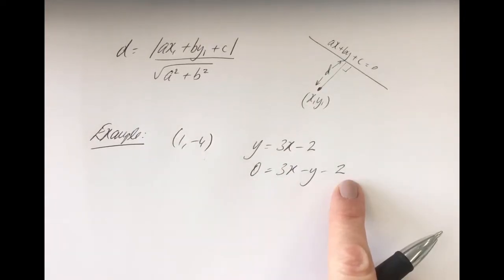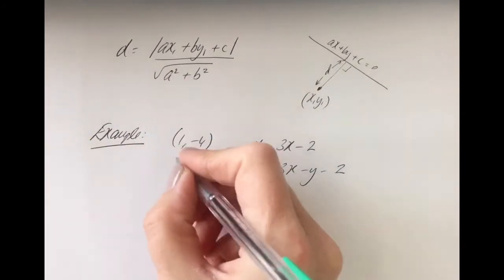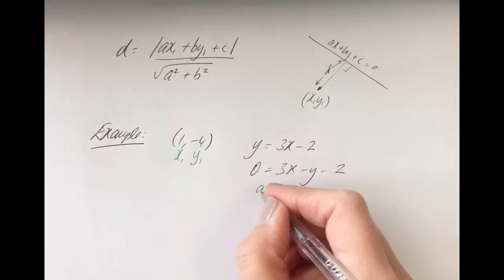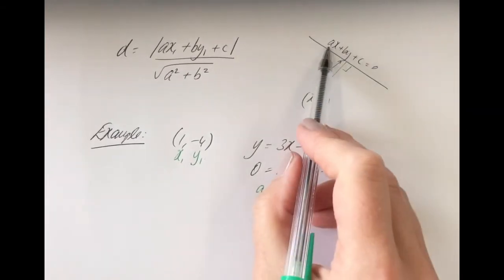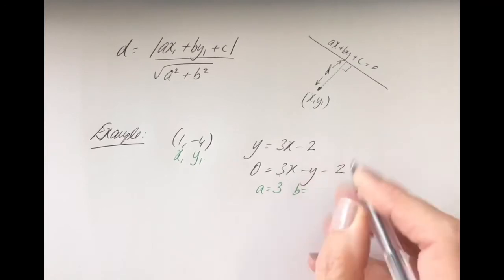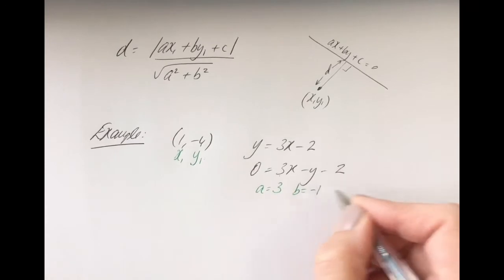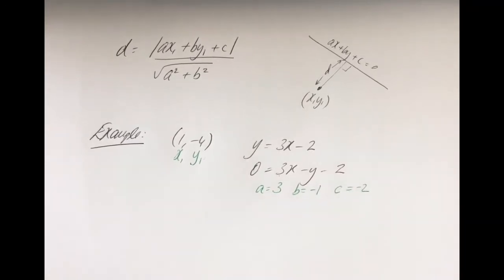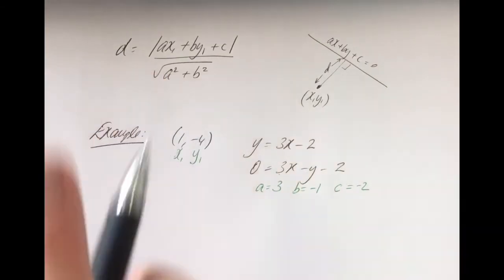Now that's in the format I need, so I can pull out the pieces of information for my formula. Label your point x1, y1. Your a is 3 because it's always the coefficient of x — the number before the x. The coefficient of y is minus 1 — the number before the y — so b is minus 1, and c is minus 2. Be very careful to include the signs if necessary. Now I have all the pieces of information I need and I'm going to substitute into my formula.